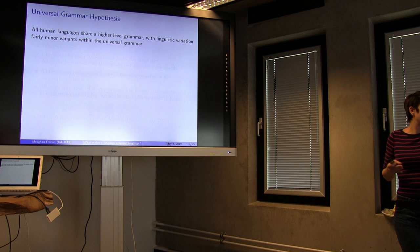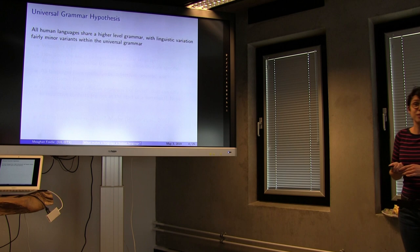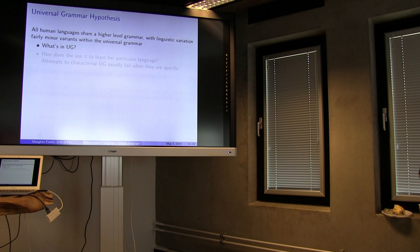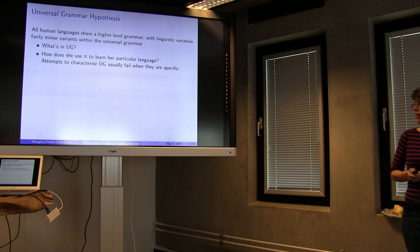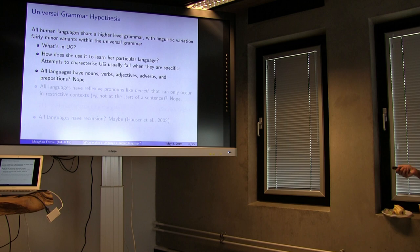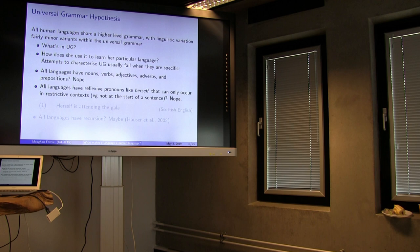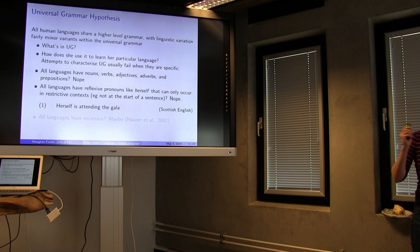This is a pretty controversial hypothesis — it's a very strong statement, which is part of the fun of it. It's tricky, though. What is in UG? When you try to answer this question, it doesn't necessarily tell you how that's going to help this baby. And usually when you try to get really specific about what might be in UG, it doesn't go very well. Sometimes people say all languages have certain categories of words — that doesn't tend to be true. One notion from binding theory is that all languages have reflexive pronouns like 'herself,' which can only occur in really specific contexts, including not at the start of the sentence. But even in Scottish English, you can say 'herself is attending the gala,' meaning she's attending the gala and she's really important. So these really specific things don't work very well.